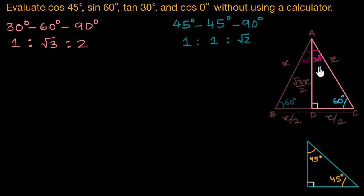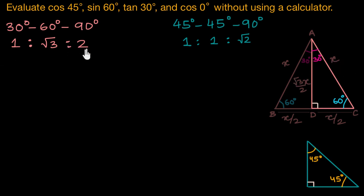Now you can go ahead and find the ratio between the sides opposite to the 30 degree angle, 60 degree angle, and the 90 degree angle. And this ratio will always be 1 : √3 : 2.